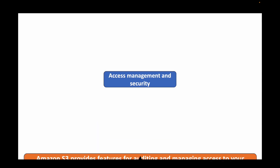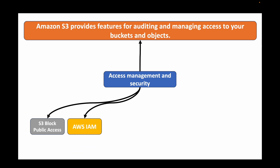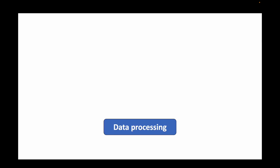The next feature is access management and security. We can use this to audit and manage access to S3 buckets and the objects inside them. Options include S3 Block Public Access, AWS IAM, bucket policies, access control lists, S3 Object Ownership, and IAM Access Analyzer for S3. By default, S3 Block Public Access prevents objects from being made public. Bucket policies can be used to implement JSON policies defining who can and cannot access the data.